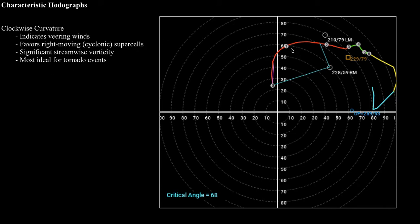Usually when you see strong clockwise curvature, that's a signal that you've got significant streamwise vorticity. That means the vorticity vector and the storm-relative motion vector are pretty much pointing in the same direction, which basically means that the thunderstorms really want to rotate. They are going to be spinning pretty rapidly if they've got a lot of streamwise vorticity.